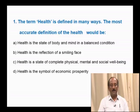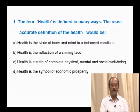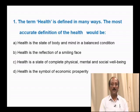Coming to the questions related to human health and disease. Question number 1: The most accurate definition of health would be — health is the state of body and mind in a balanced condition; health is the reflection of a smiling face; health is a state of complete physical, mental and social well-being; health is the symbol of economic prosperity. The correct definition for health is option C: health is a state of complete physical, mental and social well-being.